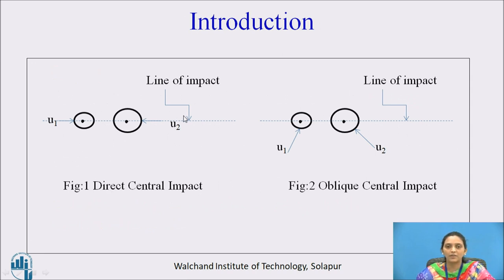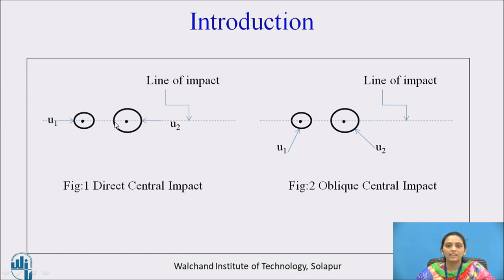In figure 1, it is shown the direct central impact. Here, two bodies are moving along the line of impact. The line of impact is the common normal of the colliding surfaces. So they are moving on the line of impact — that is why it is called direct impact. And it is called central impact because the center of masses of both bodies are on the line of impact. So it is called the direct central impact.